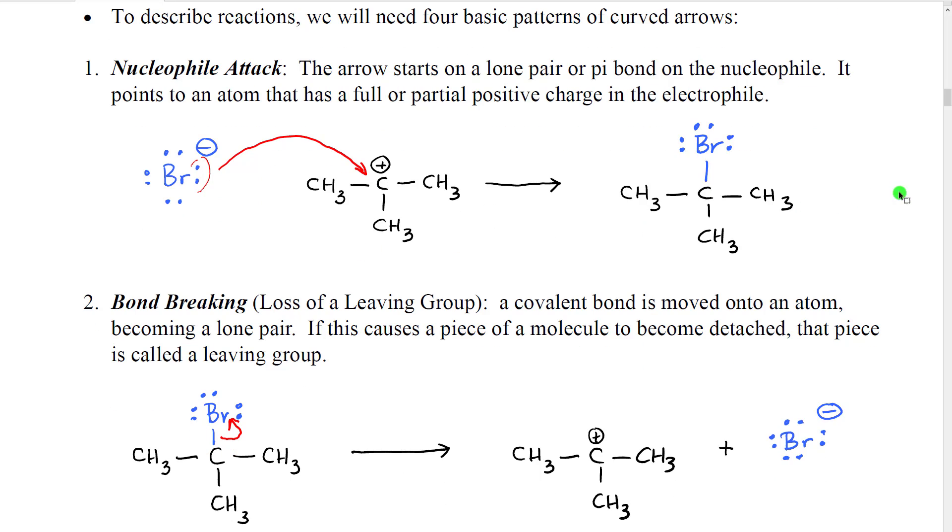There's four basic patterns of curved arrows that we see in elementary reactions. We're going to go through these and I just want you to kind of get a sense of what they represent. We're going to actually learn the specific ones for each reaction as we discuss it. So this is just sort of an overview.